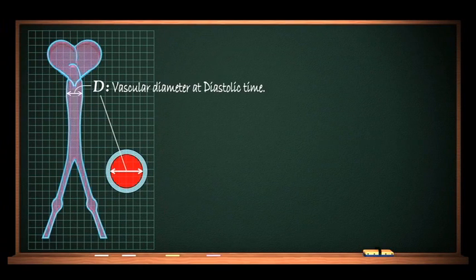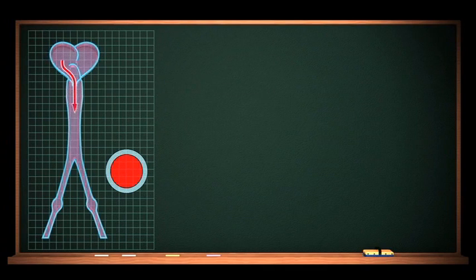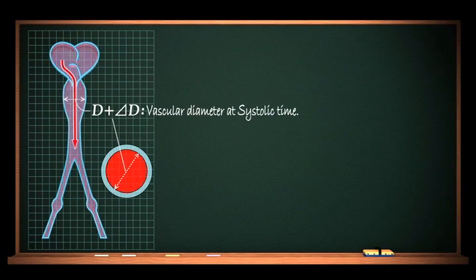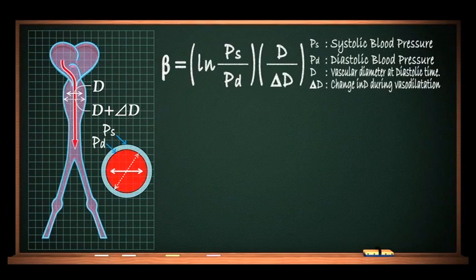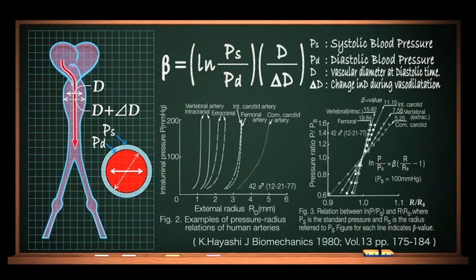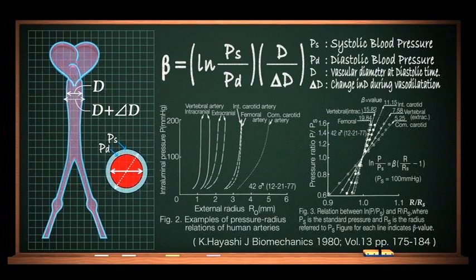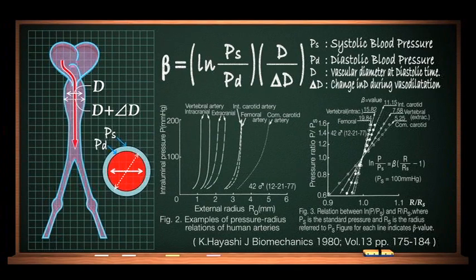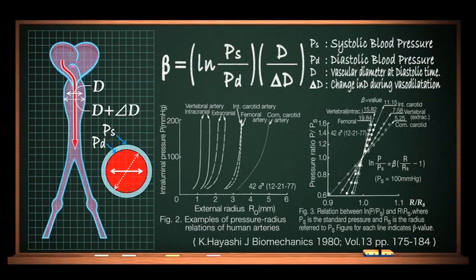When the heart contracts, pumping out blood, the internal pressure in the aorta rises, distorts the wall of the aorta, and the aorta dilates. Upon contraction, the heart returns naturally to its previous shape. This model of the functioning of blood vessels is known as the Winkessel effect.